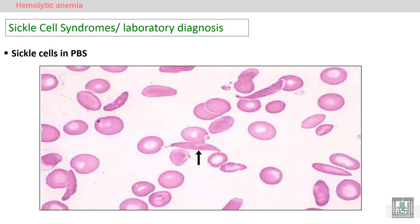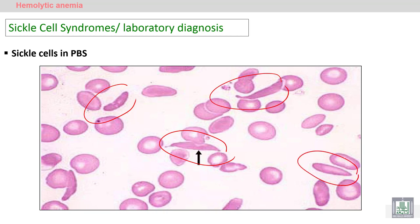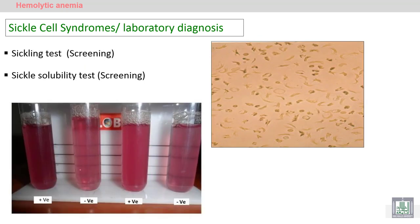In the diagnosis of sickle cell disease, laboratory diagnosis involves examining the peripheral blood smear where many sickle cells in different shapes are present. Sometimes the sickle shape is not apparent in the peripheral blood smear, so we have to perform screening.